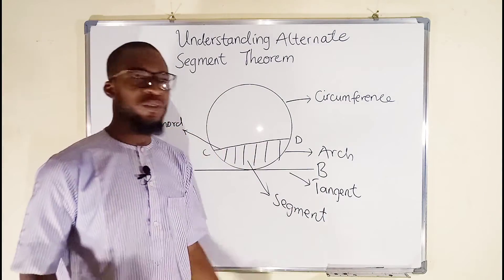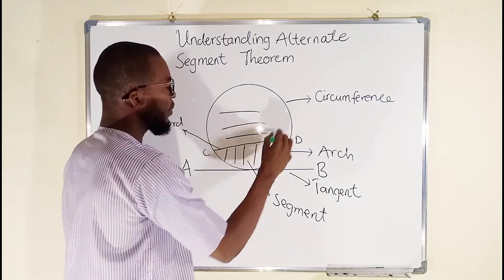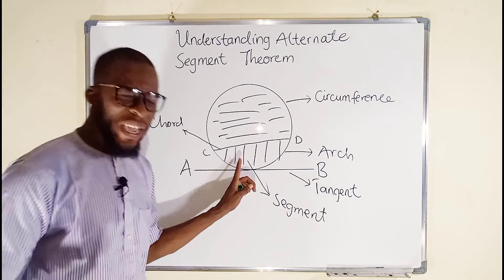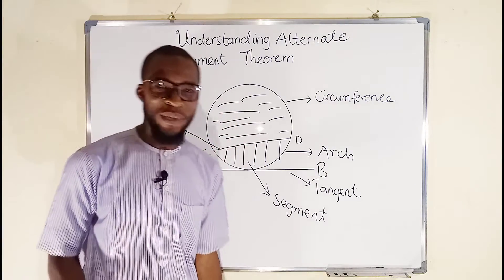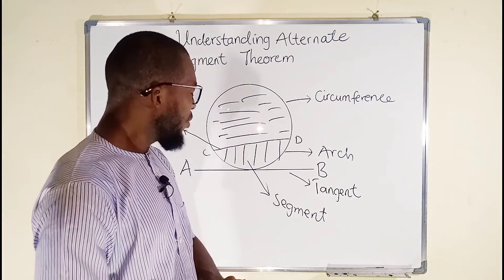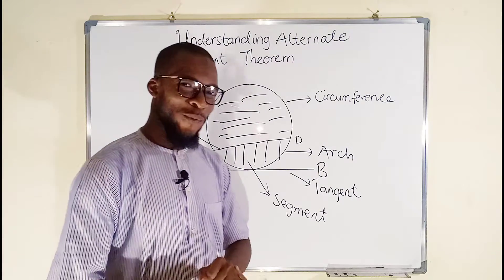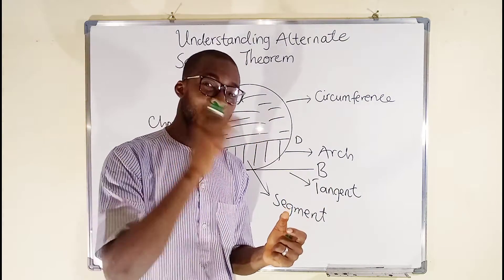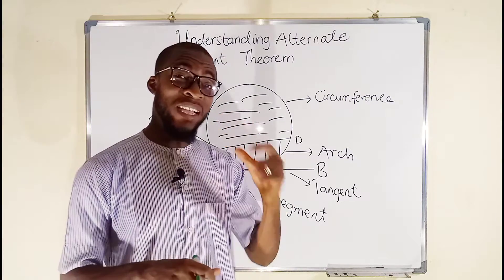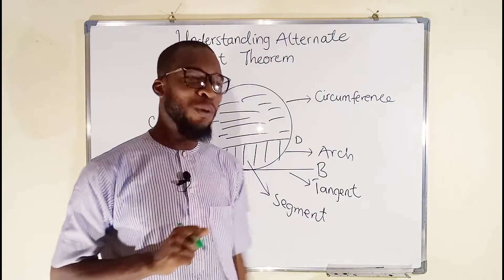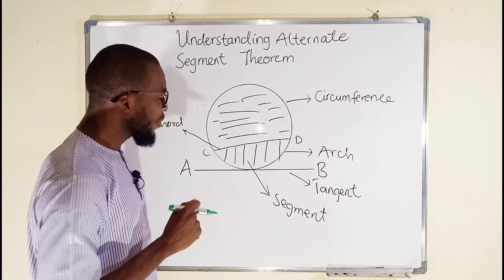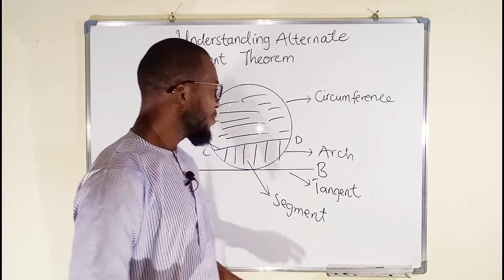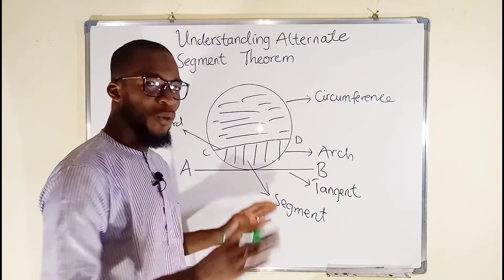This portion at the top is also a segment. What differentiates the two is that this is the minor segment and this is the major segment. Now we want to define the angle formed by the chord and the tangent. One leg of the chord must touch the point where the tangent touches the circumference at exactly one point. So we want to construct a chord that will touch this point where the tangent touches the circle.